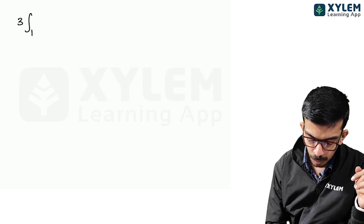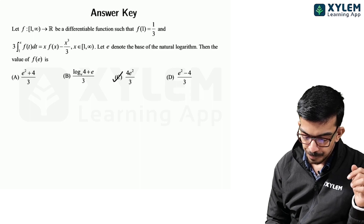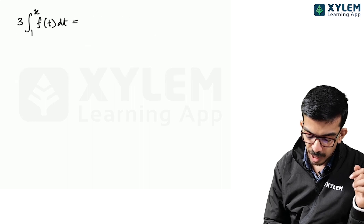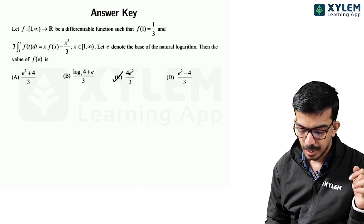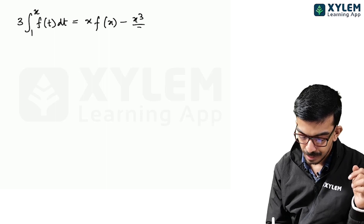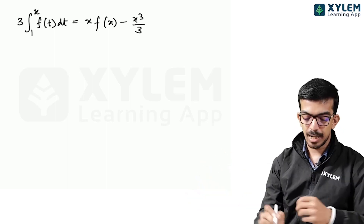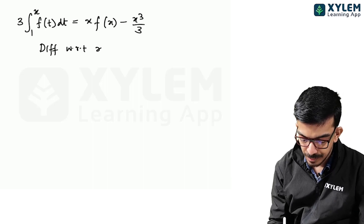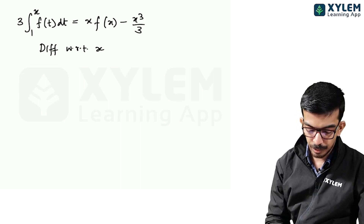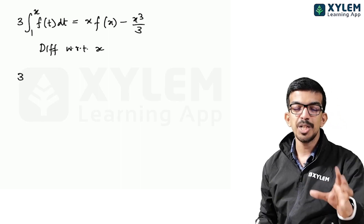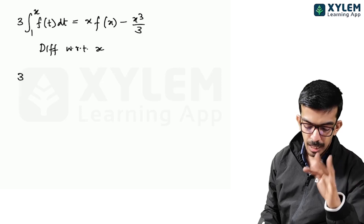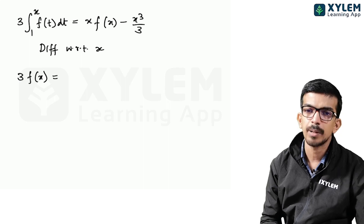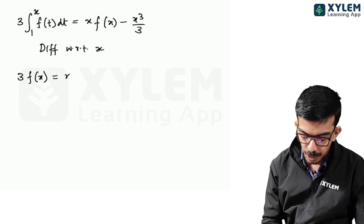We have 3 times the integral from 1 to x of f(t) dt equal to x·f(x) minus x³/3. Now differentiate both sides with respect to x.